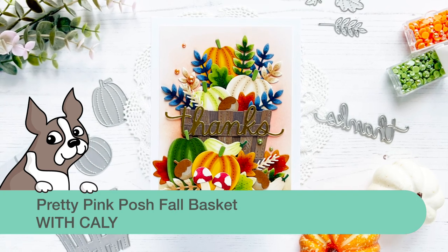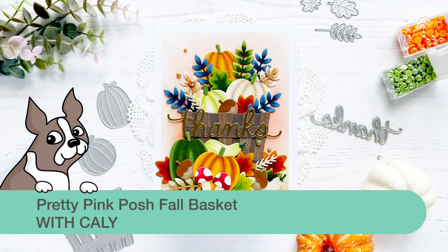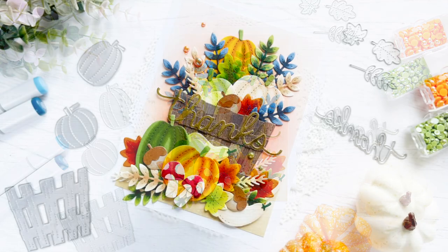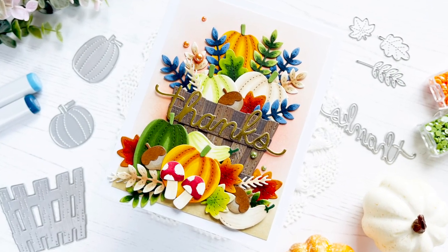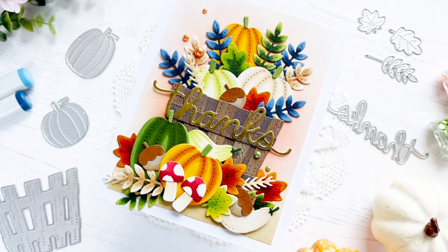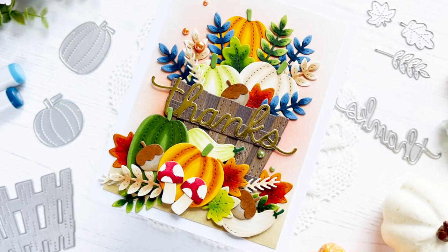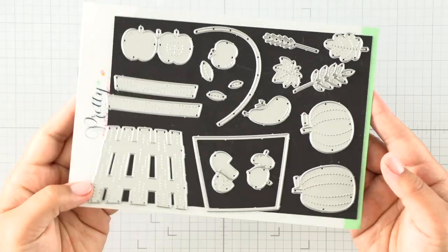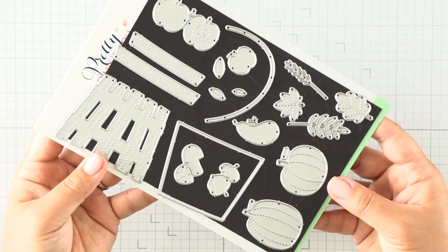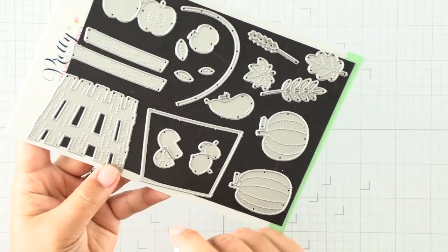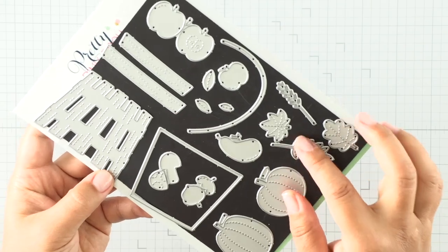Hi everyone, this is Callie. Thanks so much for being here with me today. We're creating a fall basket using some newer Pretty Pink Posh dies called the Fall Basket Dies. These dies are filled with fall foliage, pumpkins, and apples. I love that it comes with all these different fall elements.